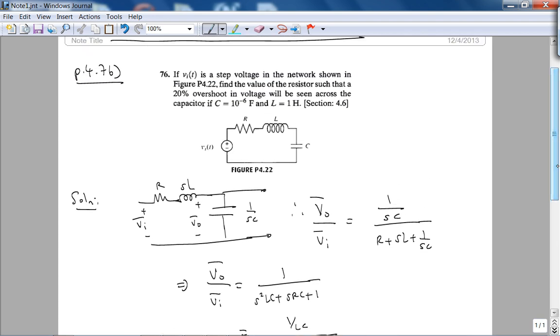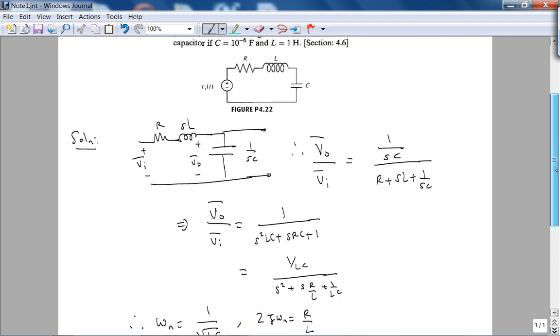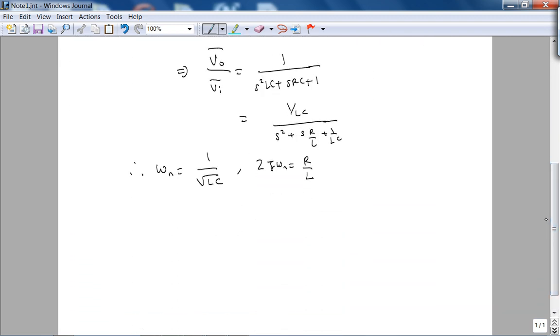So he's saying find the value of the resistor such that a 20% overshoot in voltage will be seen across the capacitor. Capacitance is given as 1 microfarad, L is given as 1 henry. So we know we have 20% overshoot, so we can find zeta. From zeta, we know we can find omega N first because we know L, we know C. We can find zeta from the percent overshoot, and so basically using this equation, we can find R.